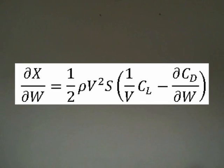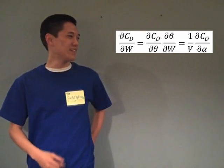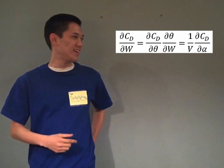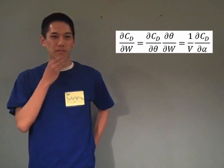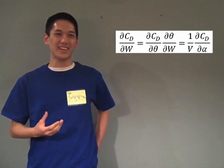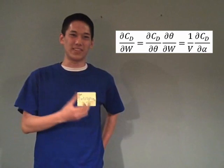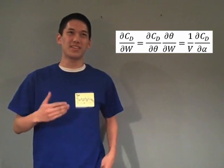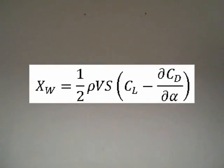What about that second term — d cd over d w? Well, we can write d cd d w as d cd d theta times d theta d w. Do you kids remember what d theta d w is? That's right, it's one over b. Now taking that and remembering that alpha is equal to theta, we can rewrite that as one over b times d cd d alpha. So bringing it all together, we have this equation. But us perturbations love simplifications, so we can take out this b and we get this.